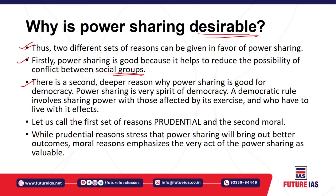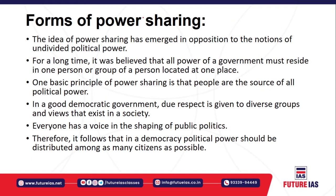Democratic rule involves sharing power with those affected by its exercise. You have to involve people whose lives are impacted by the execution of those powers. Only then can real democracy be established at the grassroot level. Power sharing brings better outcomes: stability in political order and a harmonized system in society that reduces all conflicts.